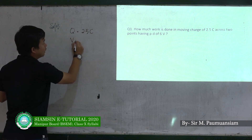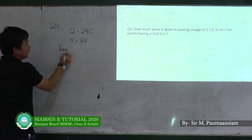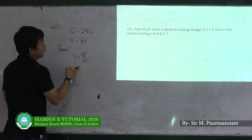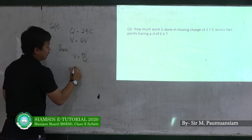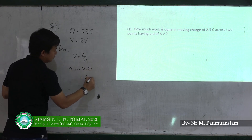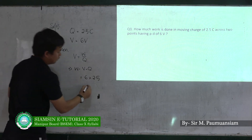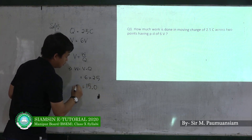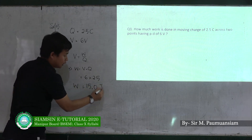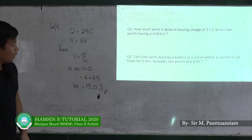Potential difference V is equal to 6V. Using the formula: potential difference equals work divided by charge, rearranging gives W equals V multiplied by Q. So W equals 6 multiplied by 2.5 C, which gives W equal to 15.0 joules.